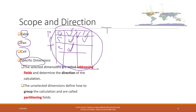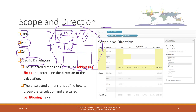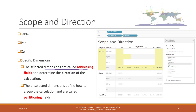You can also specify dimensions. When using a table calculation and not using panes, cells, or the full table, you can specify the dimensions directly and choose the dimensions you brought into the view. The selected dimensions are called the addressing field — for example, categories would be the addressing field. The unselected dimensions are called the partitioning field, which determines how to group the calculation. The addressing field determines the direction of the calculation.